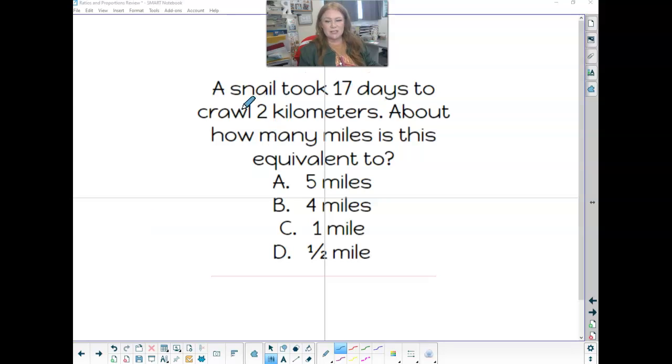A snail took 17 days to crawl two kilometers. About how many miles is this equivalent to? So we are taking our two kilometers. The fact that it took 17 days is extra. We don't need that. And we want to change that into an approximate. So this is not exact. It's about how many miles.